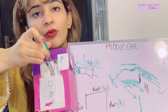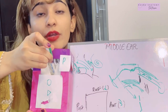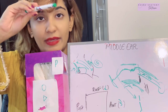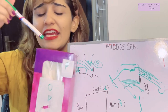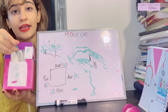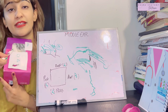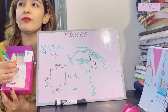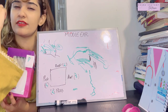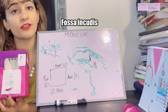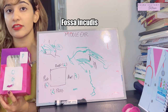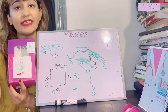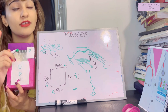The second content is the fossa incudis — a fossa into which the process of the incus bone (one of the ossicles) sits. The third content is the pyramid, a conical projection around which the stapedius muscle wraps before going to insert on the stapes bone.